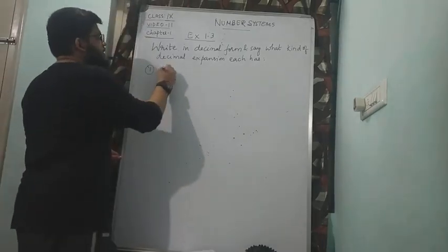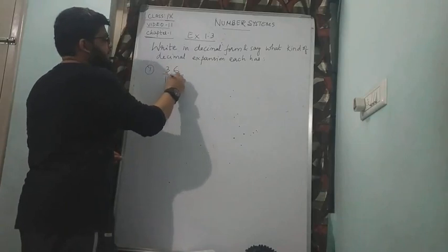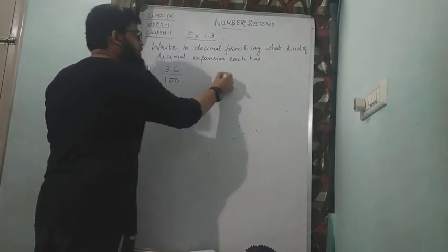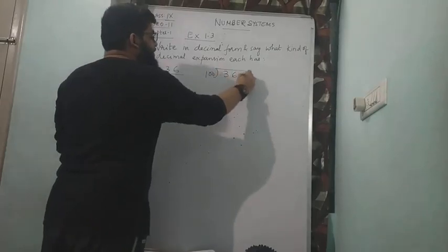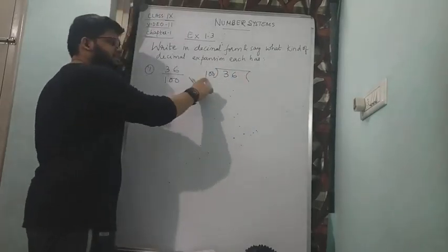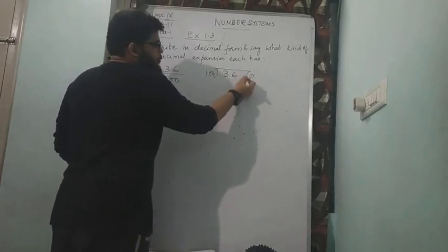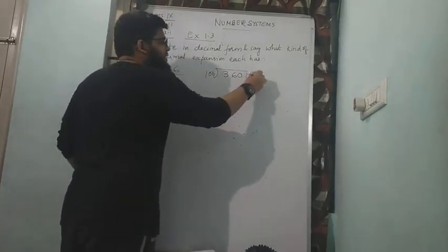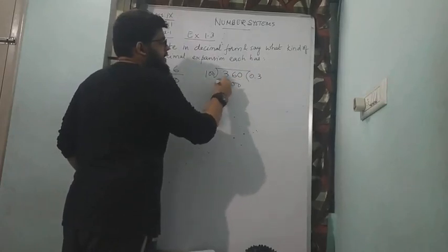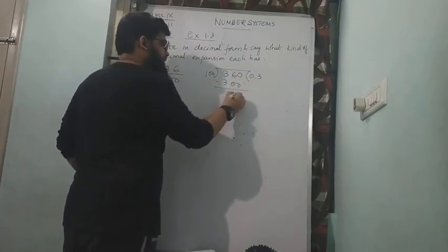The first question will be 36 divided by 100. So let us divide this. 36 will not come in the table of 100, so I will take 0 point and make this as 360. So 100 times 3 is 300, and 360 minus 300 is 60.